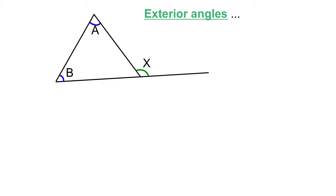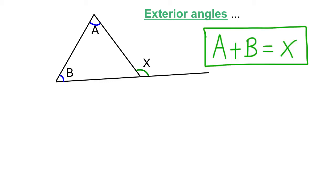The next angle property of triangles is the property of exterior angles. Here I have a triangle with two interior angles labeled A and B, and an exterior angle on the opposite side of the triangle. An exterior angle is the angle between the side of the triangle and the extension of another side. That exterior angle happens to equal the sum of the two opposite interior angles, so we write A plus B equals X.